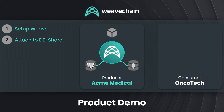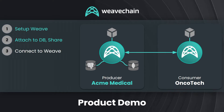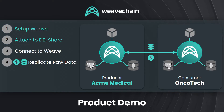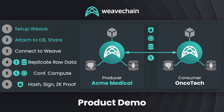Oncotech, our consumer, will connect that weave, pay to replicate a raw hospital directory, and then pay to run some confidential computing on patient data. Finally, Oncotech will validate the data lineage with the hashes, signatures, and proofs that Weave Chain created.